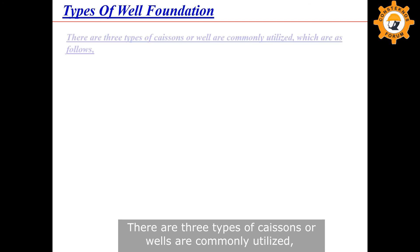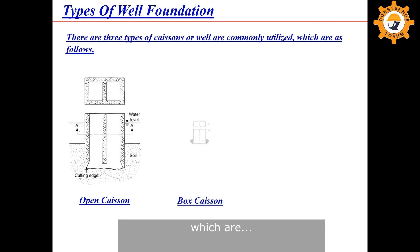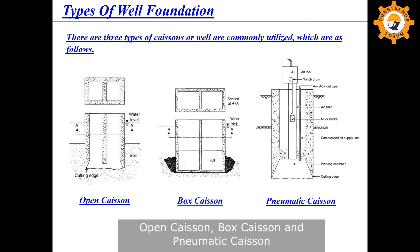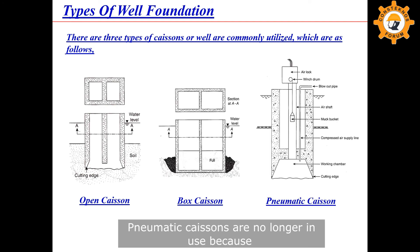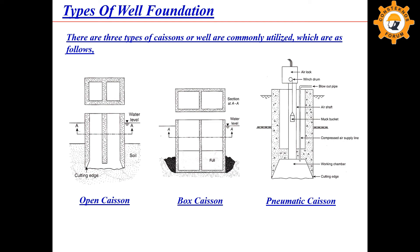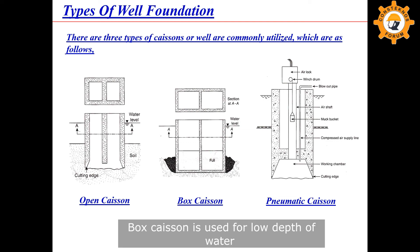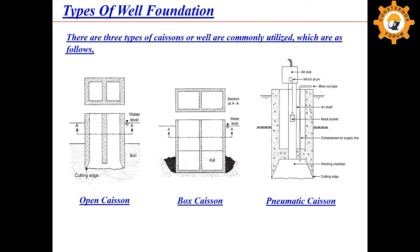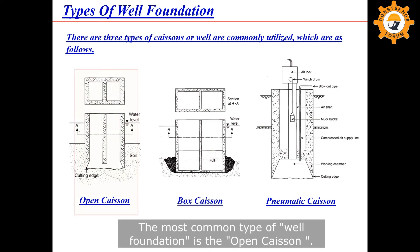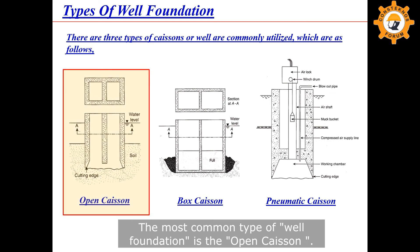There are three types of caissons or wells commonly utilized: open caisson, box caisson, and pneumatic caisson. Pneumatic caissons are no longer in use because workers have to work in compressed air, which is not safe for human health. Box caisson is used for low depth of water and is not suitable for deep water rivers like the Ganga. The most common type of well foundation is the open caisson.